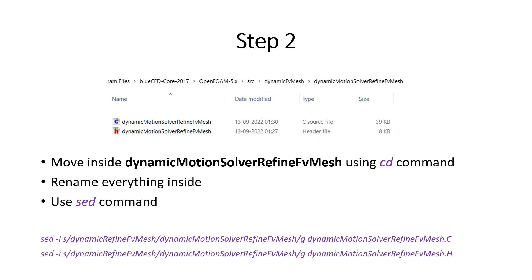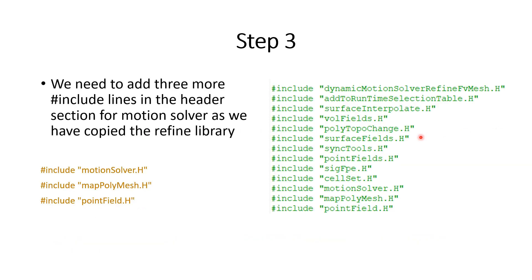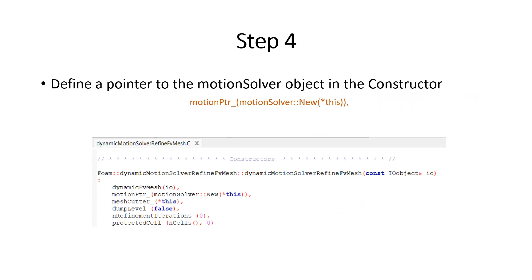Step 3: we are going to add three hash-include lines in the header section. Because we are adding the motion solver and have copied the refine library, these three includes need to be added at the end of the header includes. This step is now done.